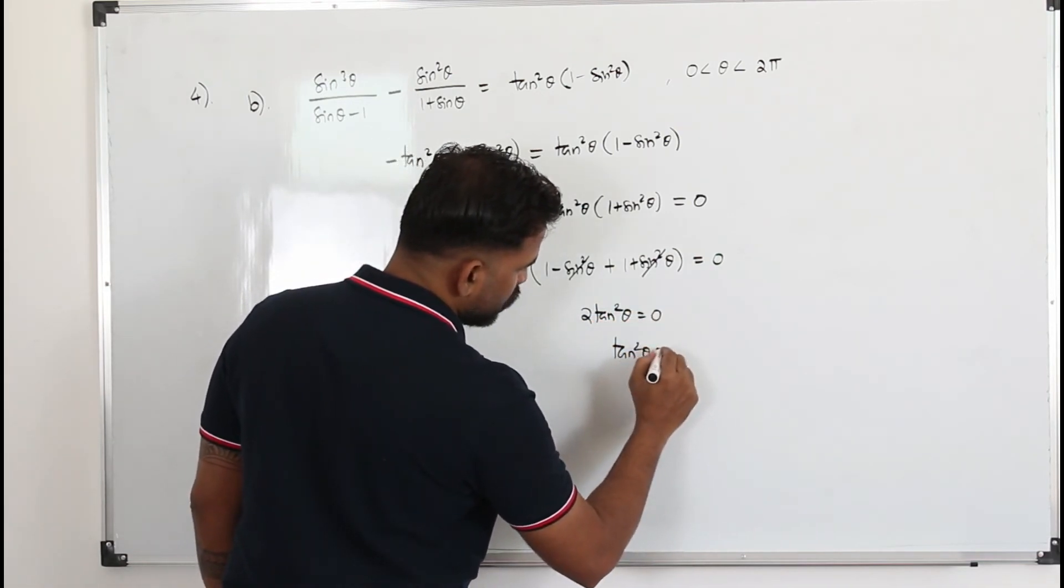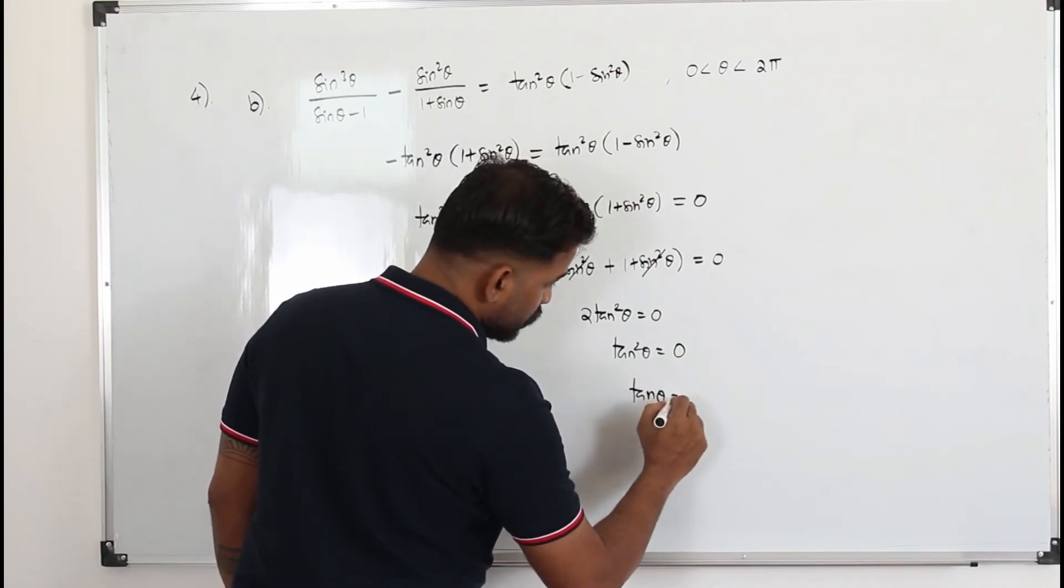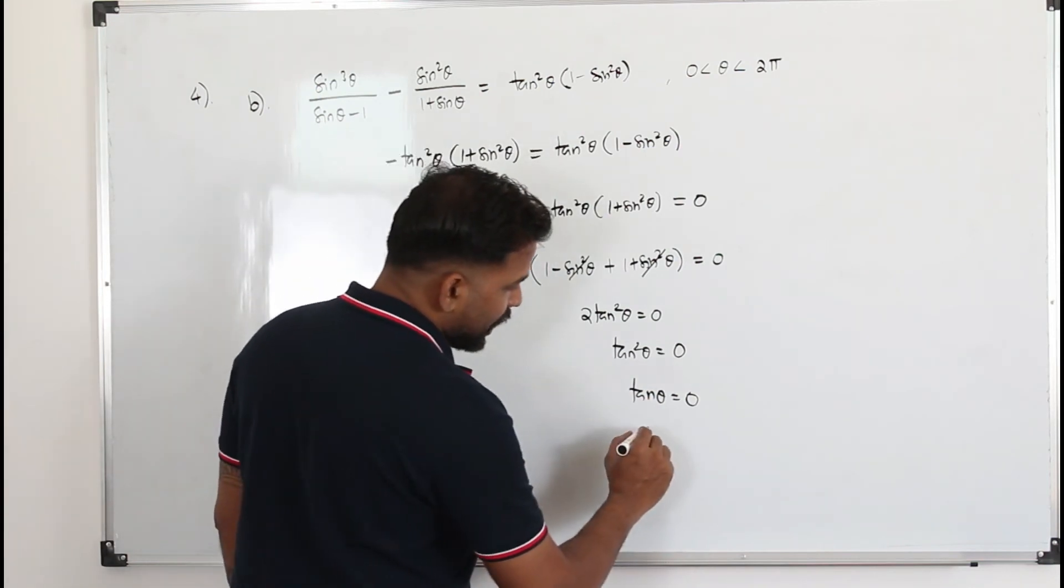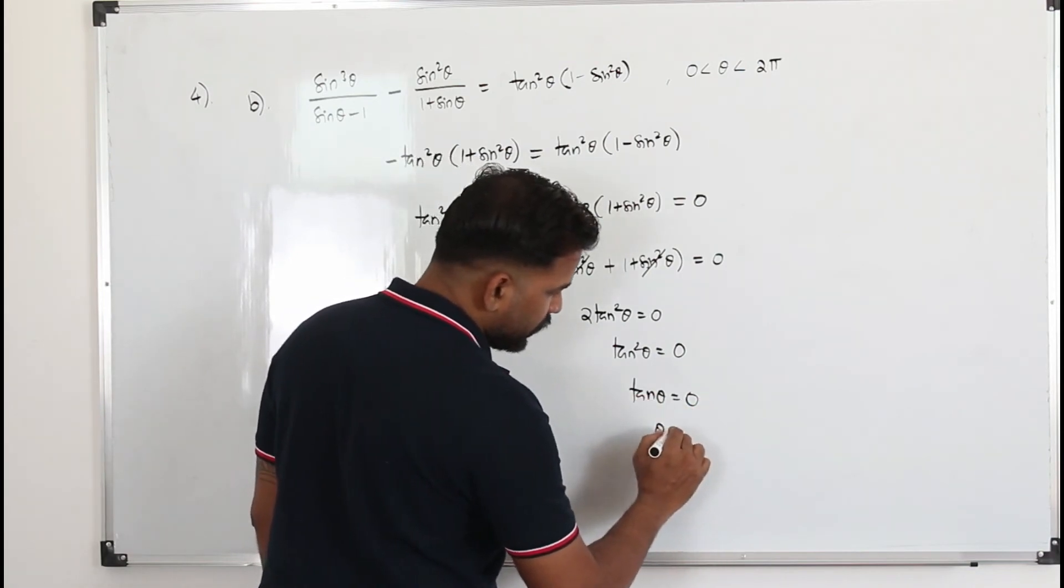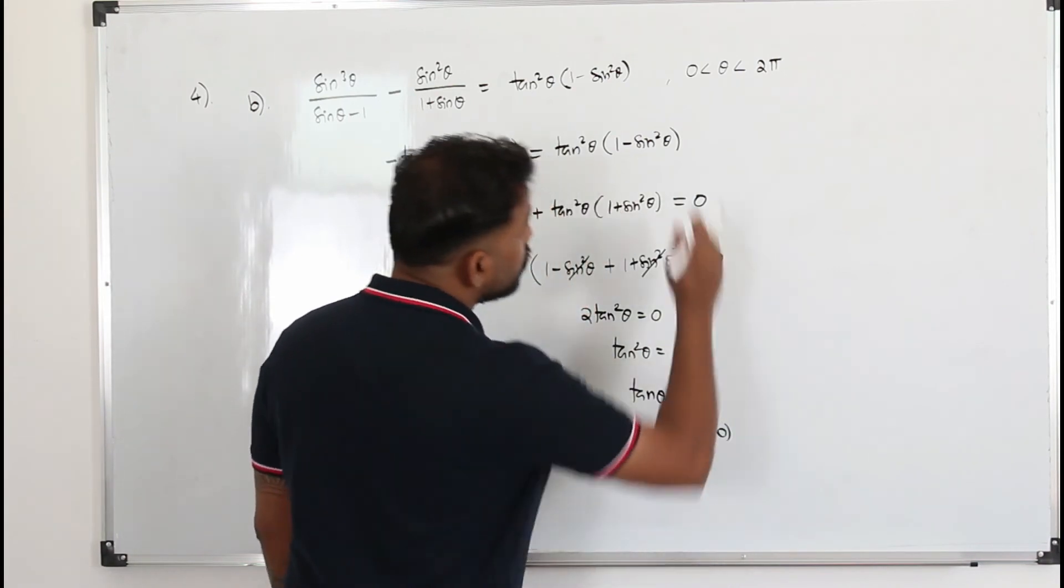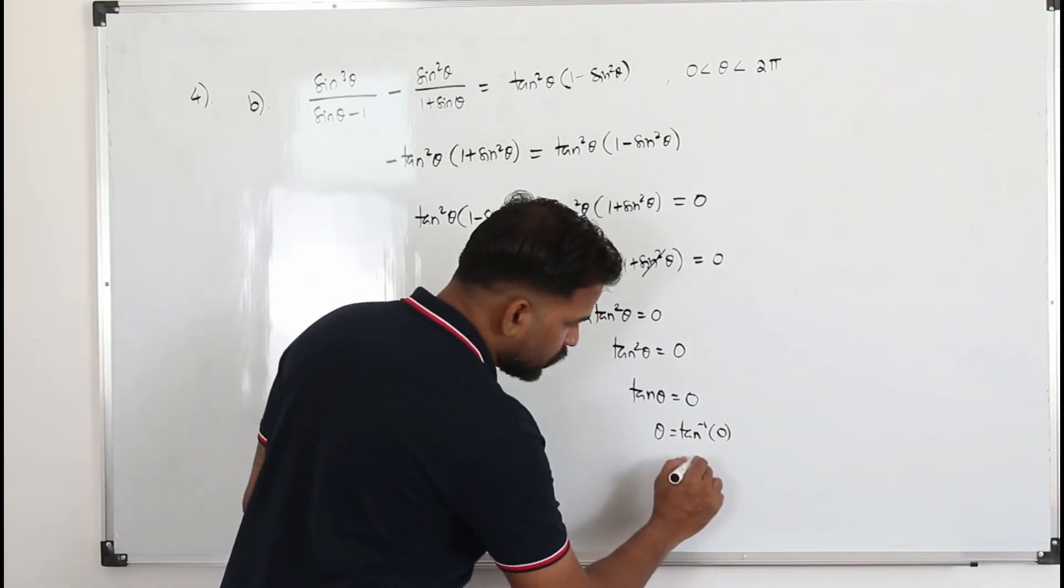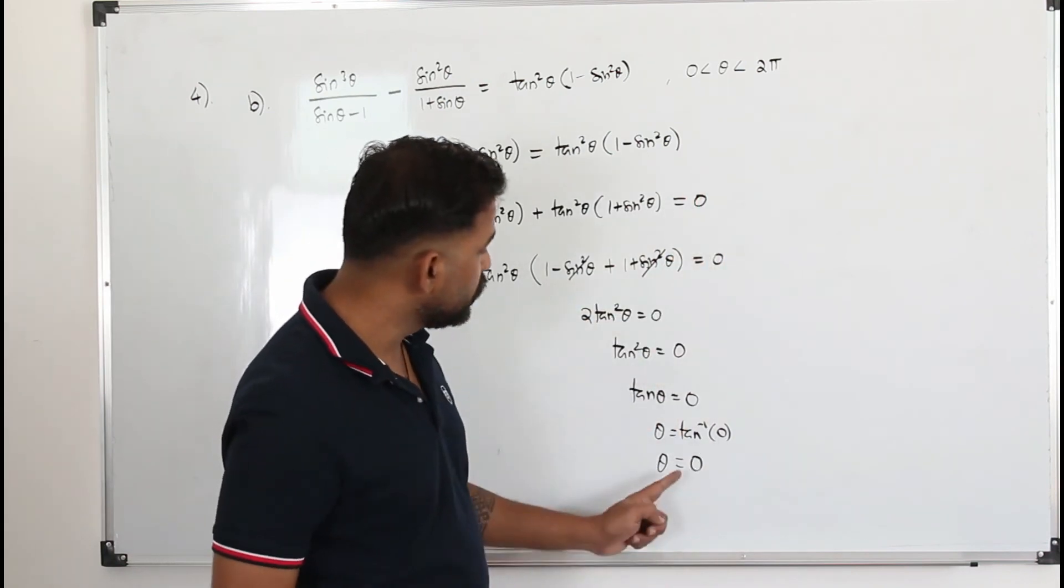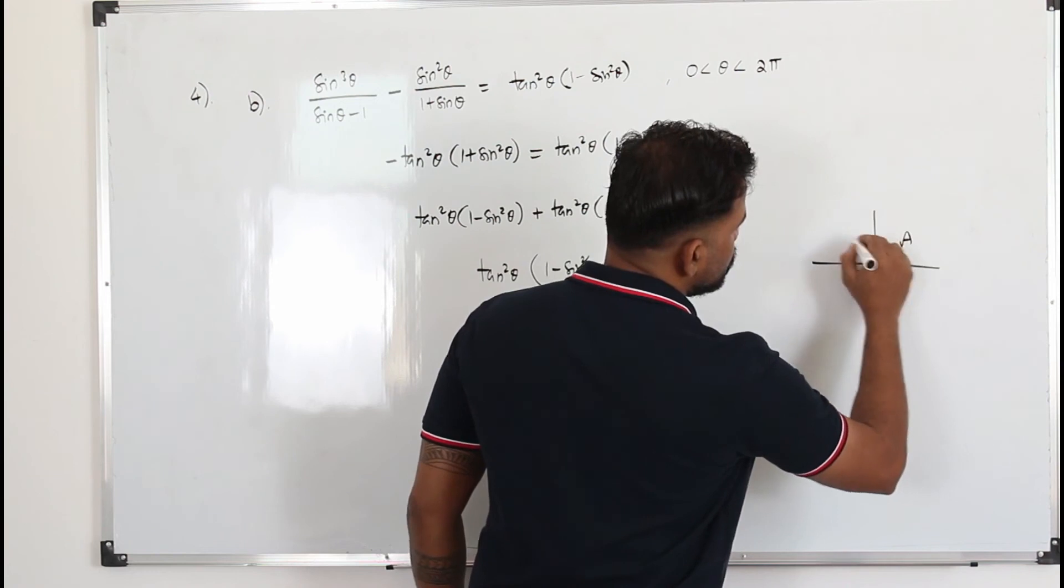Tan²θ = 0/2 = 0. Take square root, tanθ = 0 again. If tan²θ is 0, tanθ is also 0. Solve this, you find tan inverse of 0 in radians. So it's 0. θ = 0. That's not the solution. That's the principal value. We need to find the θ values in this limit.